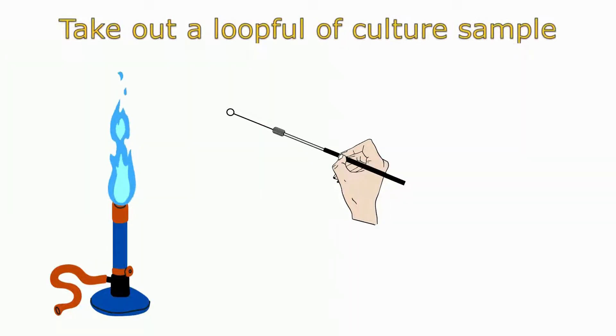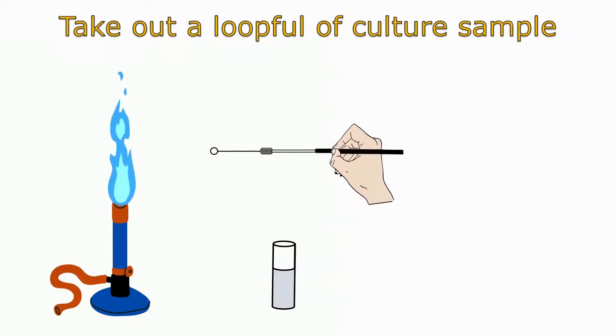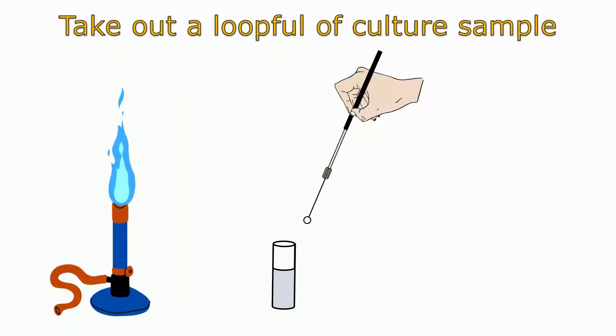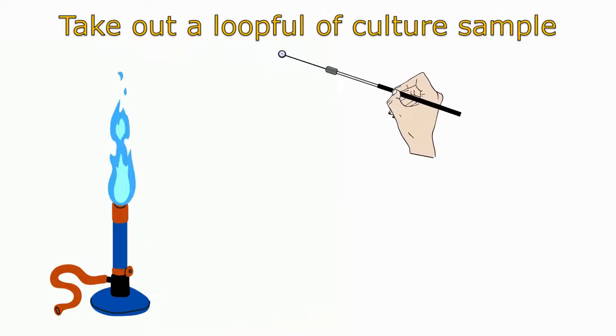Now the loop is sterile and you can take out the culture sample using this sterile loop. Dip the loop in the test tube containing a liquid sample having a mixture of bacteria. A loopful of culture sample is taken on the wire loop.